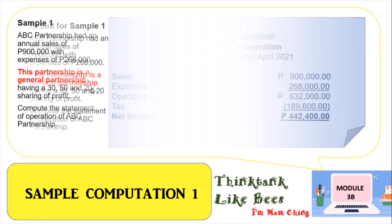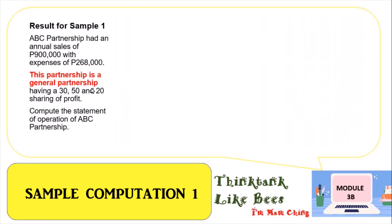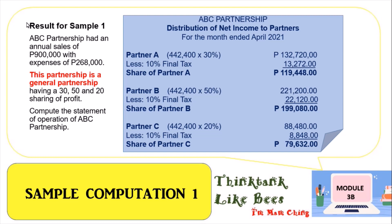Here is the computation for Partner A. Partner A has 442,400 multiplied by 30 percent, which gives 132,720. Less the 10 percent final tax: 132,720 times 10 percent equals 13,272 to be paid to the BIR. So Partner A's net share after the 30 percent corporate tax and 10 percent final tax is determined accordingly.